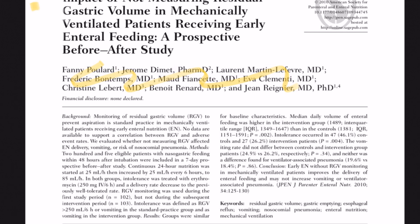These researchers recognized that monitoring residual gastric volume to prevent aspiration was standard practice in 2009 — and for some of us it's still standard practice in 2019 — even though there was no data available to support the correlation between residual gastric volumes and adverse event rates. They had 205 eligible patients receiving tube feeds. They defined intolerance as volumes greater than 250 cc's every six hours or vomiting. Patients who had their tube feeds checked for residual volumes received less nutrition over the course of the study.